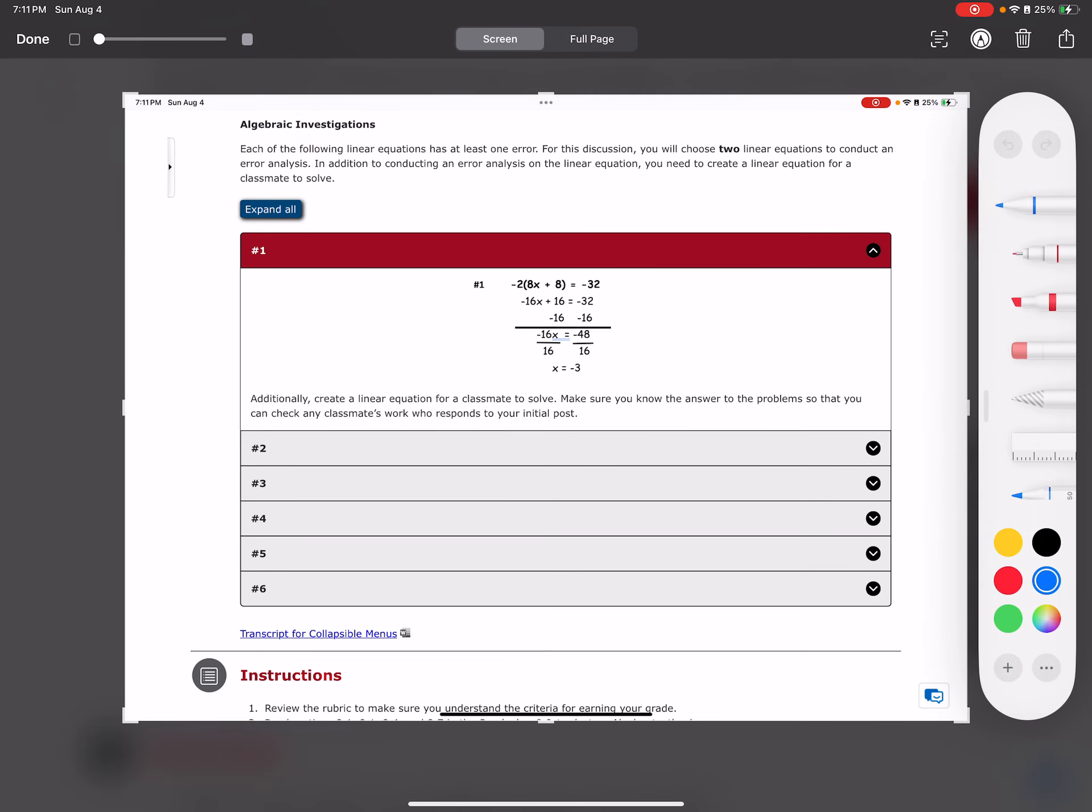I went ahead and solved it. Next to it, I wrote negative 2 times 8x plus 8 equals negative 32. I solved it to the next step: negative 2 times 8x is negative 16x, then negative 2 times negative 8 is negative 16 equals negative 32. Then I said, wait a minute, you can see they have positive 16, I have negative 16. Error one.